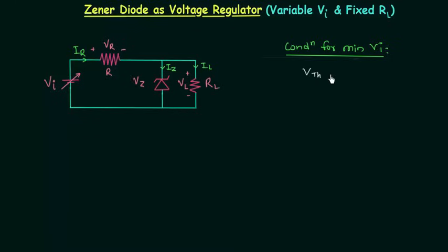That's why I am calling this voltage VTH, and it must be greater than or equal to VZ in order to turn on the Zener diode. When VTH is less than VZ, the Zener diode will turn off.